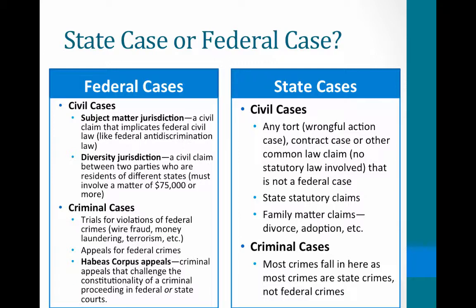Determining whether something is a federal or state case can become tricky — in fact, there are lawyers who don't always know the difference. Generally, for our purposes, there are two types of federal cases: civil and criminal. For civil cases, there are two ways to have a federal case. The first is subject matter jurisdiction, meaning there is a federal law implicated in your lawsuit — for example, suing an employer for violating the federal Civil Rights Act based on racial termination. The second is diversity jurisdiction: a civil claim between two parties who are residents of different states involving $75,000 or more.